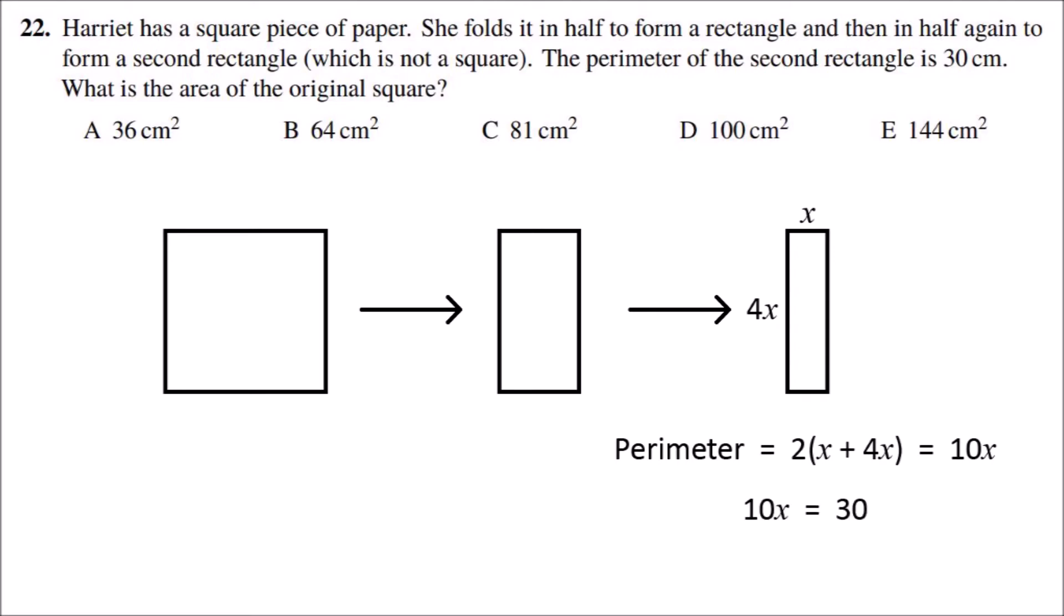We already know that the perimeter is 30 centimeters, so that means that x will be 30 divided by 10, which is 3.